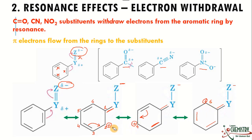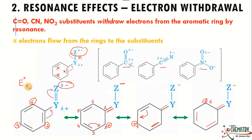Now focus on which positions have the positive charge because of the electron withdrawing substituent: we have positive charge on position number two, on position number four, and on position number six. Since benzene always undergoes electrophilic substitution reactions, and electrophiles always have positive charge, the electrophile cannot attach to these positions with positive charge. So what positions are left for the electrophile? Only position number three and position number five are left. That is the reason with electron withdrawing groups, only positions three and five are available.